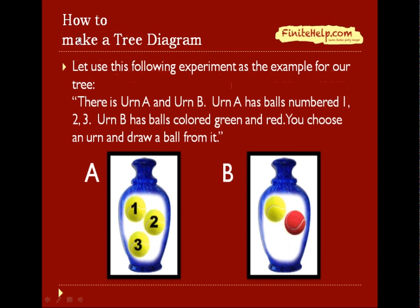You're going to learn how to make a tree diagram, and we're going to use this following experiment as an example. Let's say there's urn A and urn B. Urn A has the ball number 1, 2, and 3, and urn B has ball colored green and red. You're going to first choose an urn and then draw a ball from it.